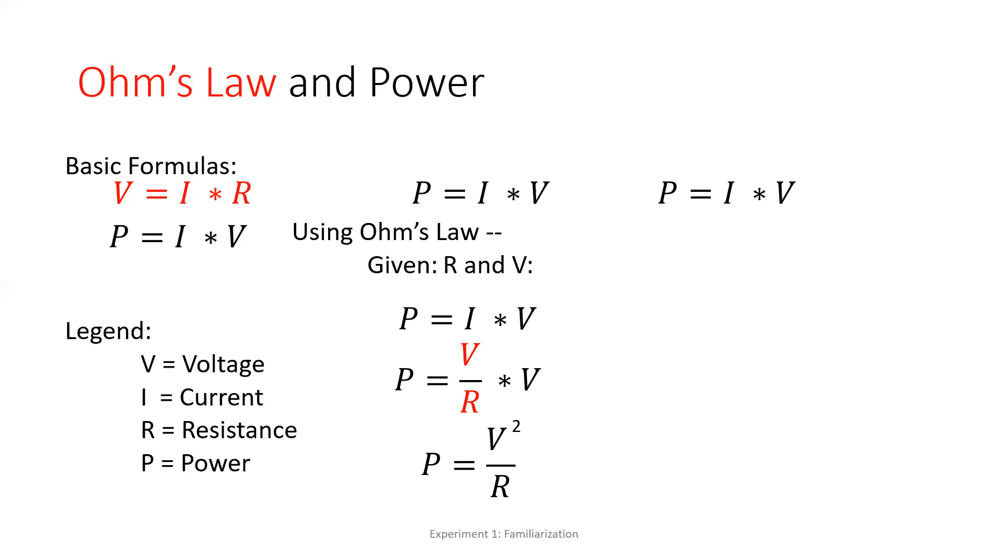So again, we have power equal to current times voltage. So what if in this case, we are only given resistance and current? We don't have voltage. So if we don't have voltage, so given this basic equation, power equal to current times voltage, we can express voltage in terms of current I times R. So we have power equal to I squared times R. So these are the formulas that we can use in solving for power.